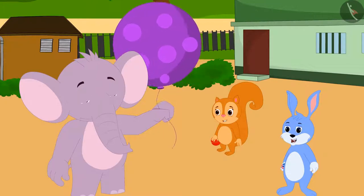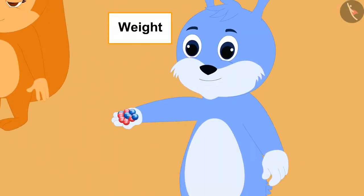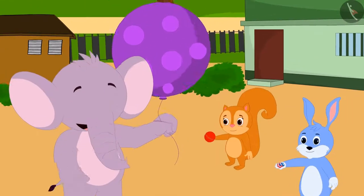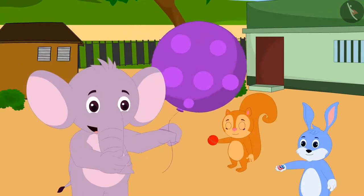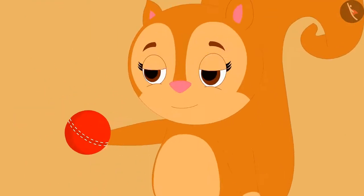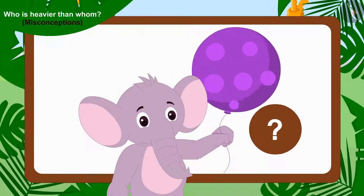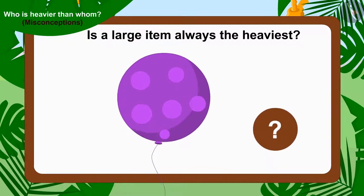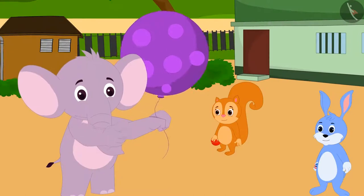All three have come up with a unique way to decide which game to play today — the person whose toy weighs the most, all three will play that game. Appu immediately said, 'Look how big my balloon is compared with your toys! It means the weight of my balloon is more than your marbles and cricket ball. Let's play with my balloon!' Children, do you find any truth in Appu's statement? In reality, is a large item always the heaviest?